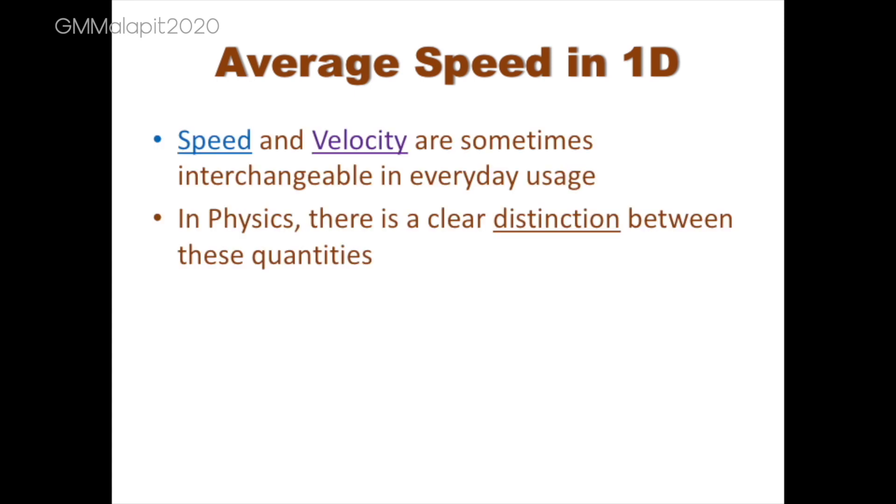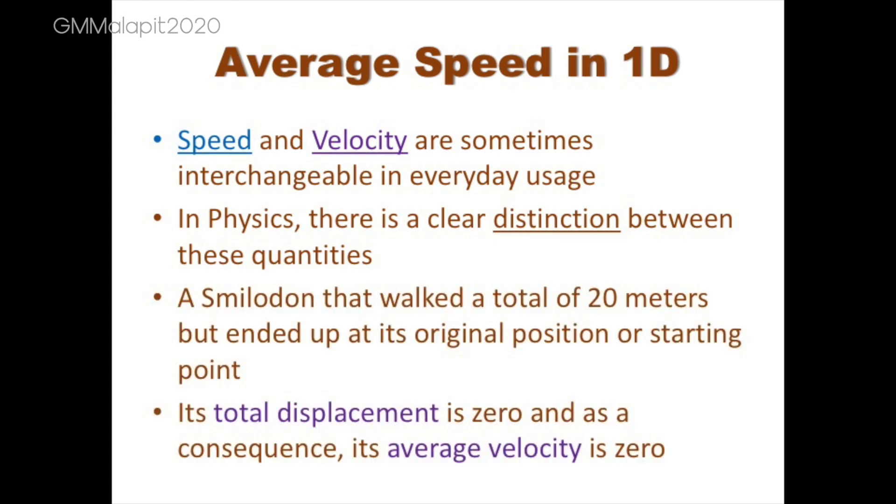The terms speed and velocity are interchangeable in everyday usage, but in physics, there is a clear distinction between these quantities. A smilodon that walked a total of 20 meters but ended up at its original position or starting point has a total displacement of zero, and as a consequence, its average velocity is zero.